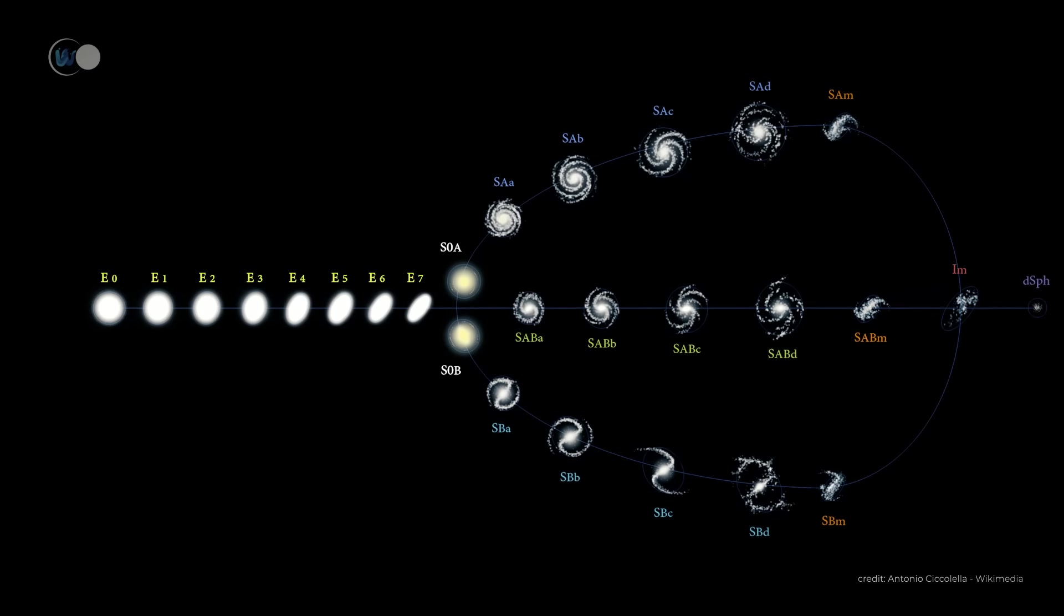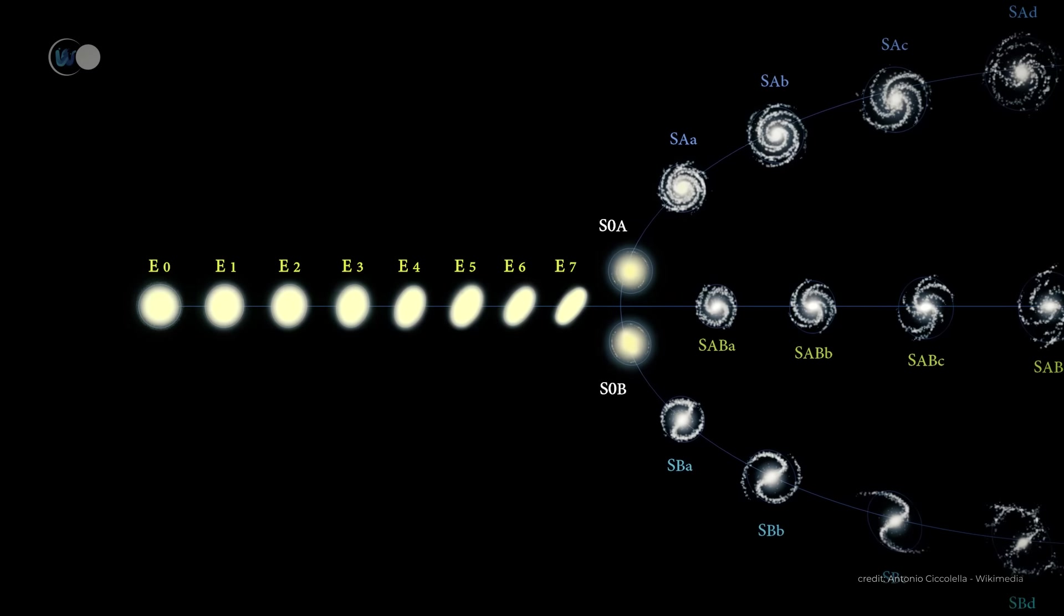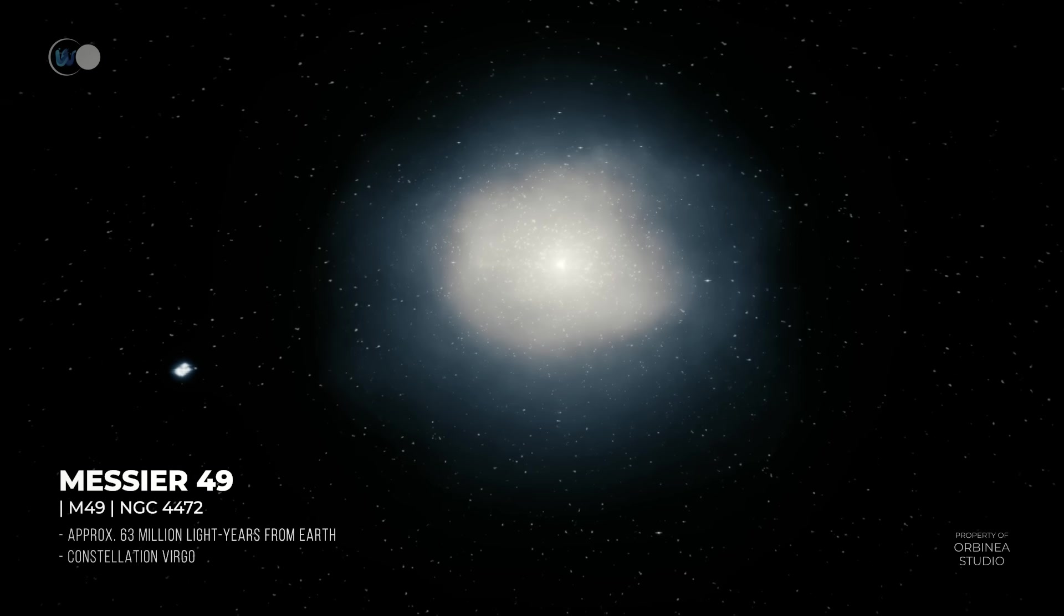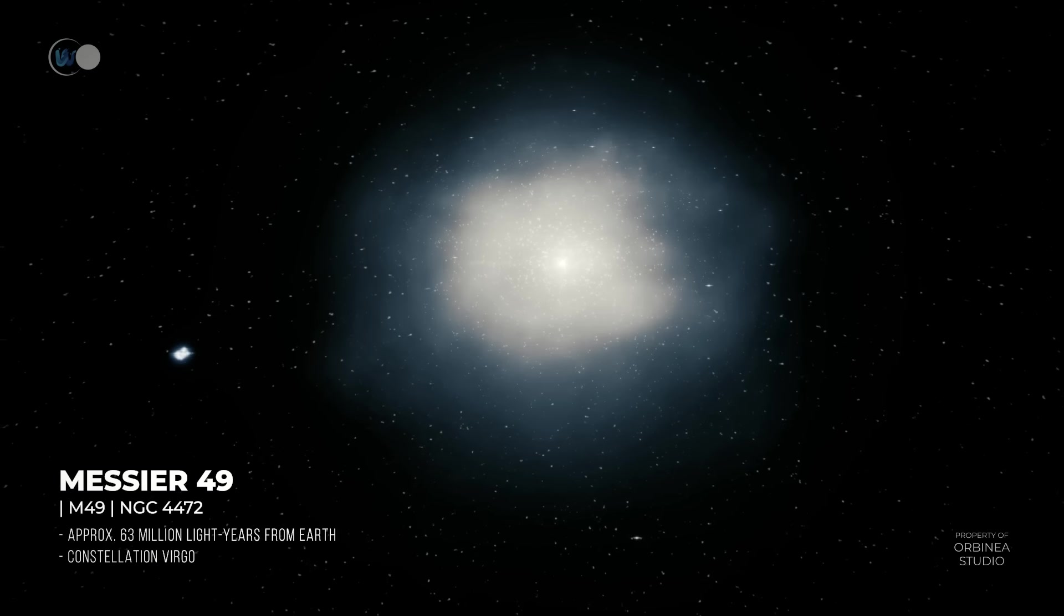The second type of galaxy is elliptical. They are mainly made up of old stars and contain little gas and dust. Their structure is spheroidal.